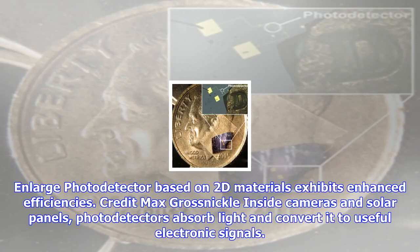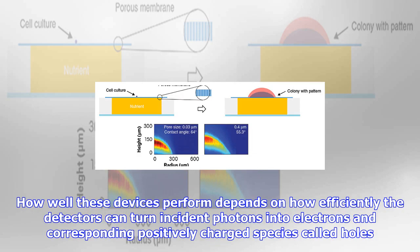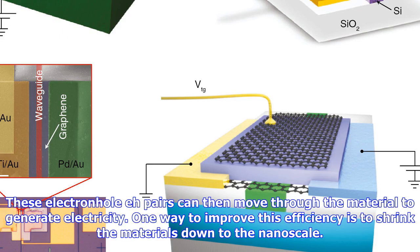Inside cameras and solar panels, photodetectors absorb light and convert it to useful electronic signals. How well these devices perform depends on how efficiently the detectors can turn incident photons into electrons and corresponding positively charged species called holes. These electron-hole pairs can then move through the material to generate electricity.